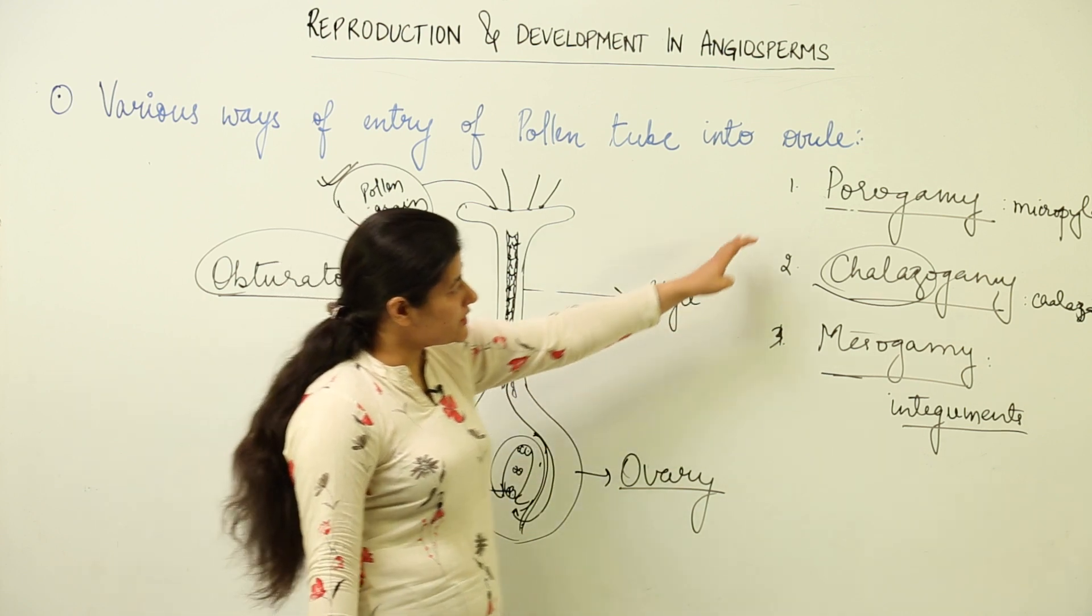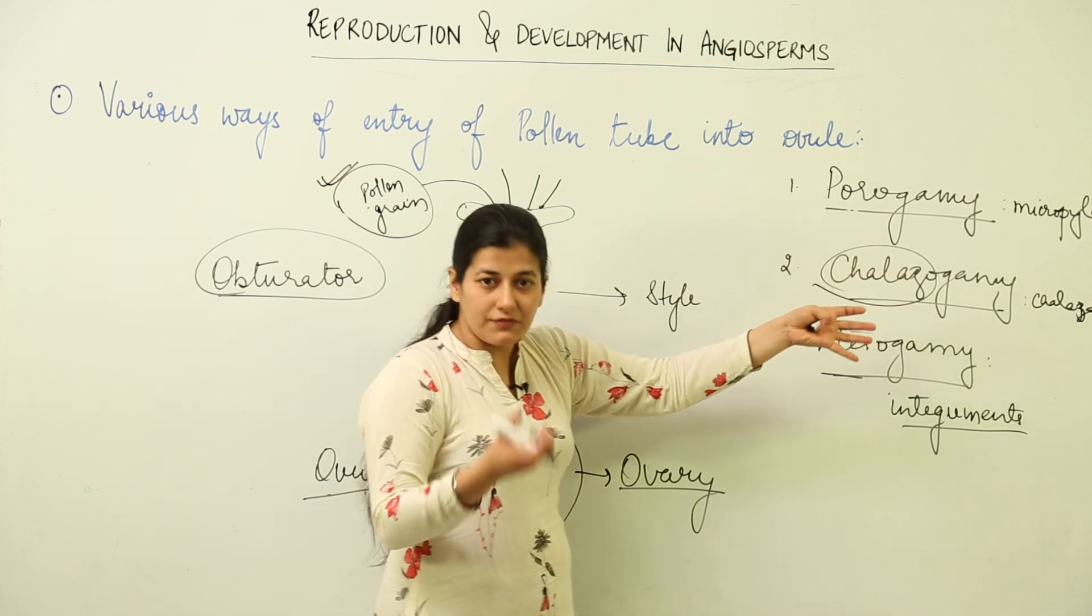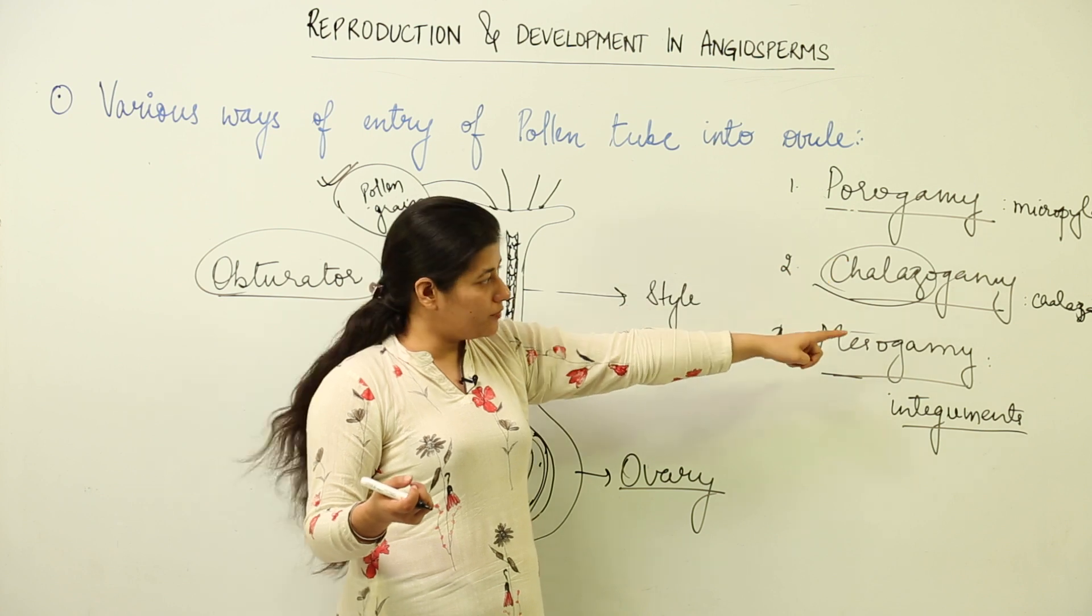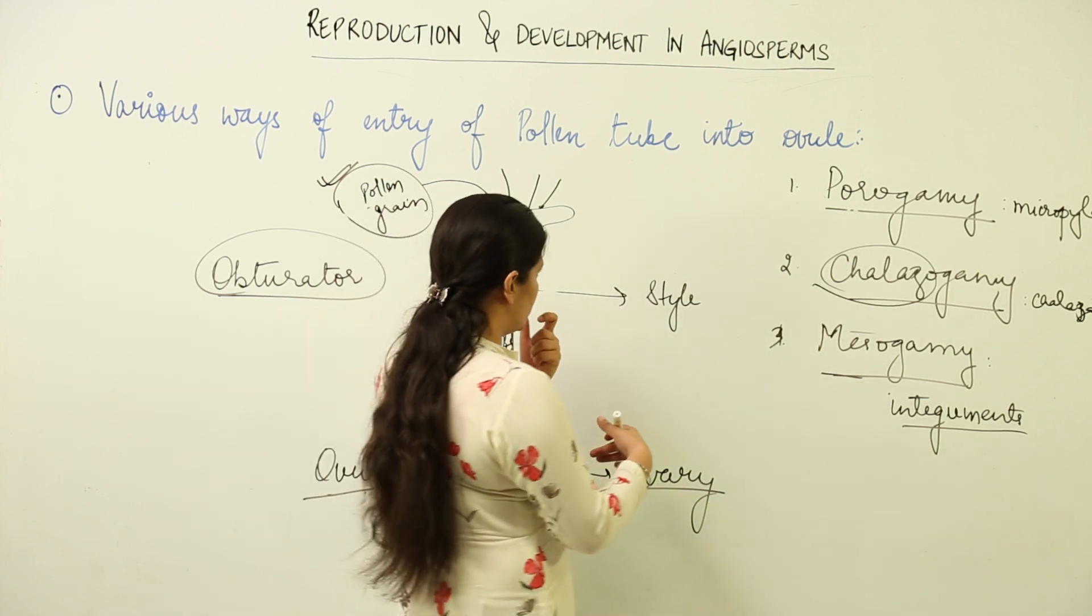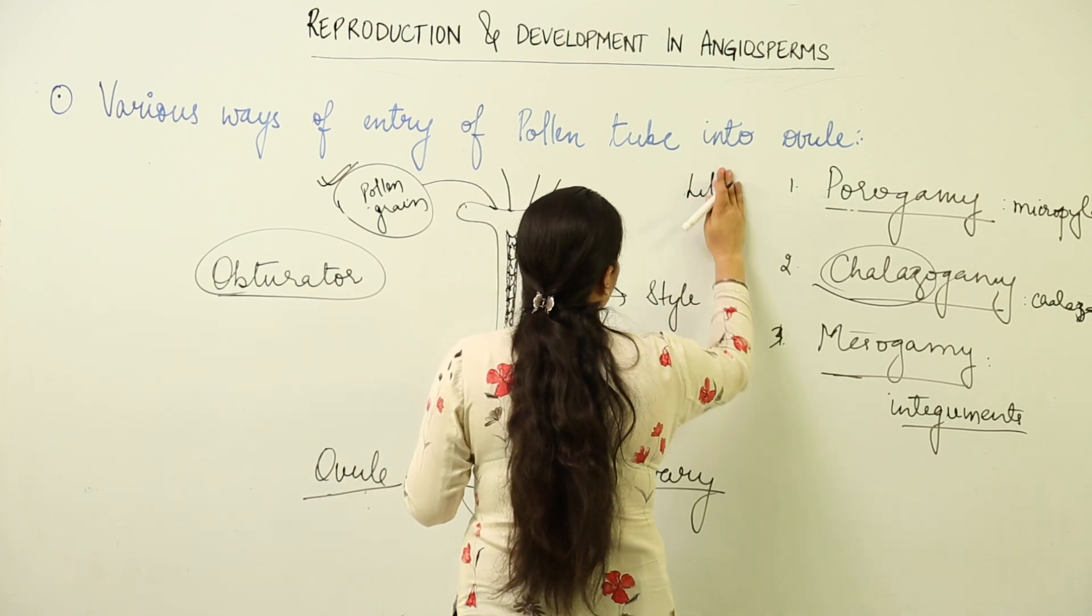These are the three ways in which the ovule receives the pollen tube or the pollen tube enters the ovule, either through the micropyle or the chalazal end or through the integuments, the transverse entry of the pollen tube. Example for porogamy is lily.